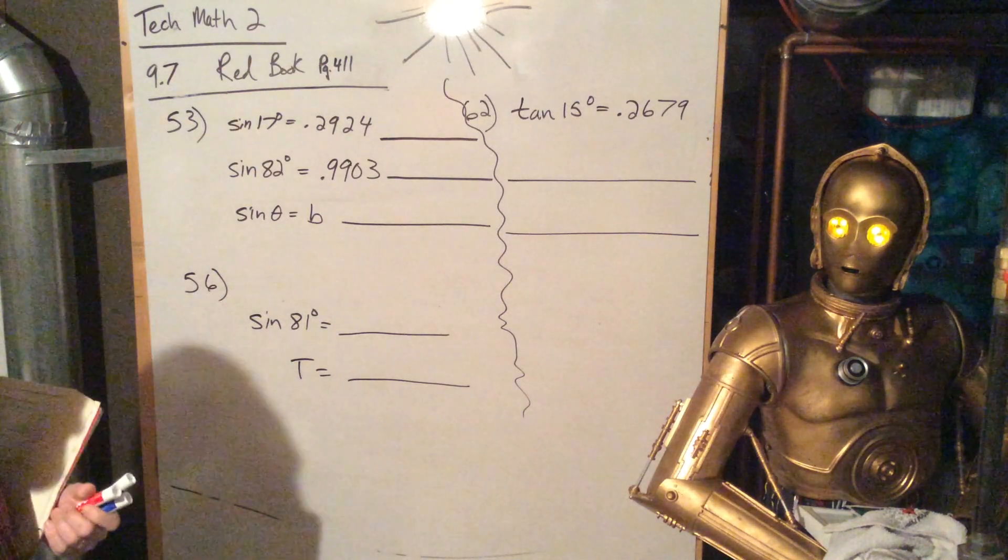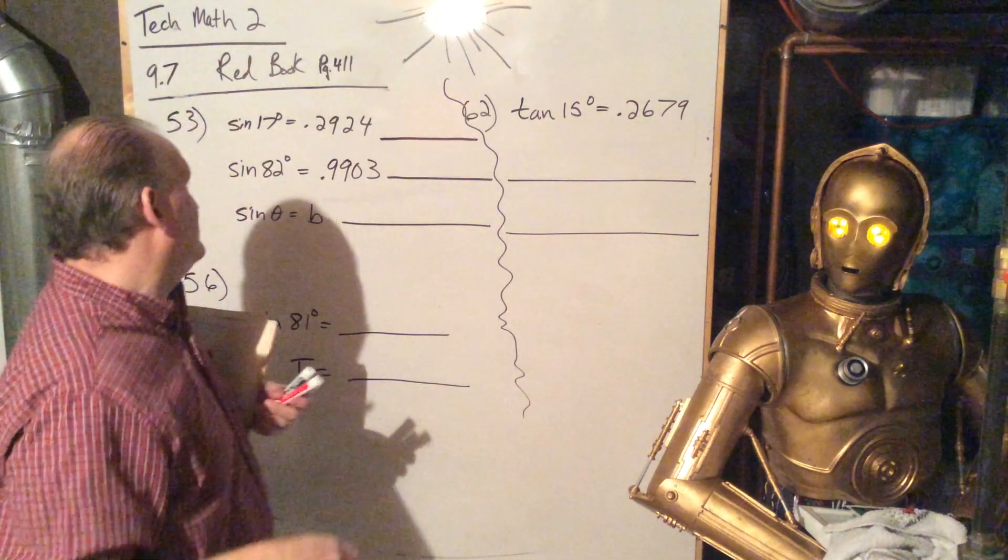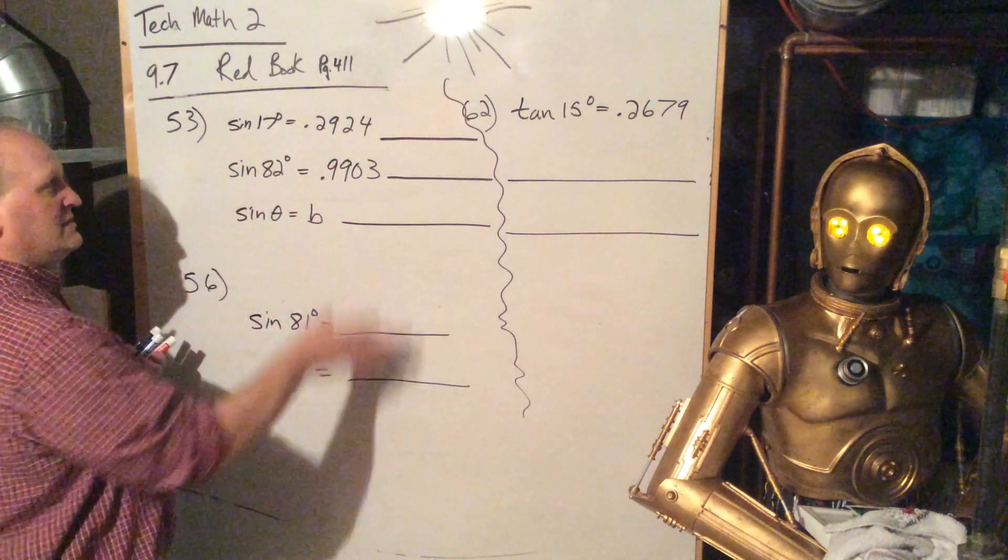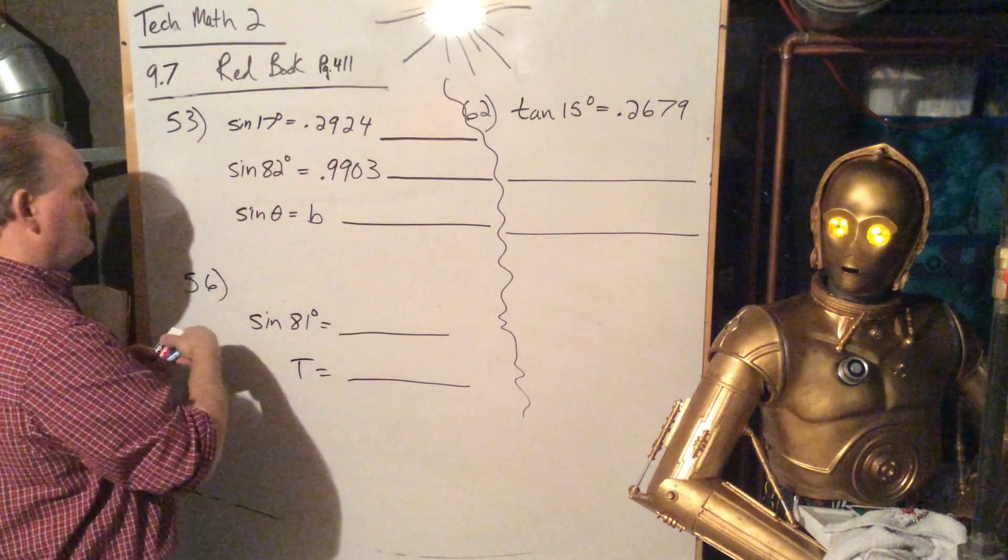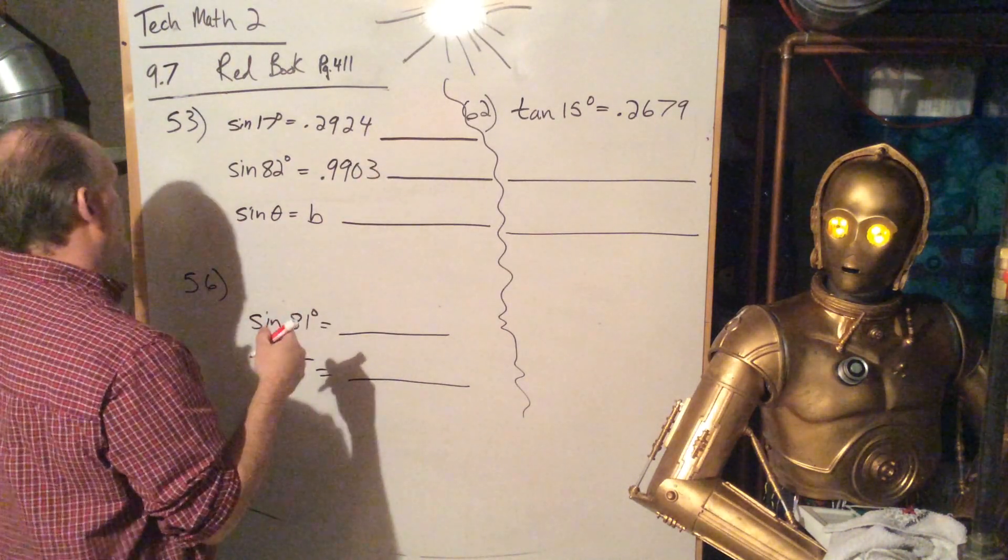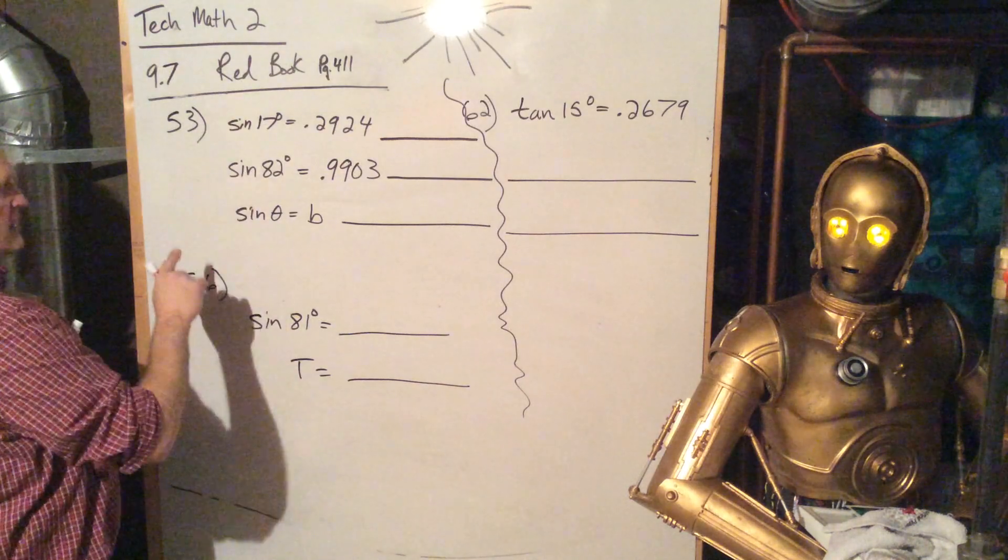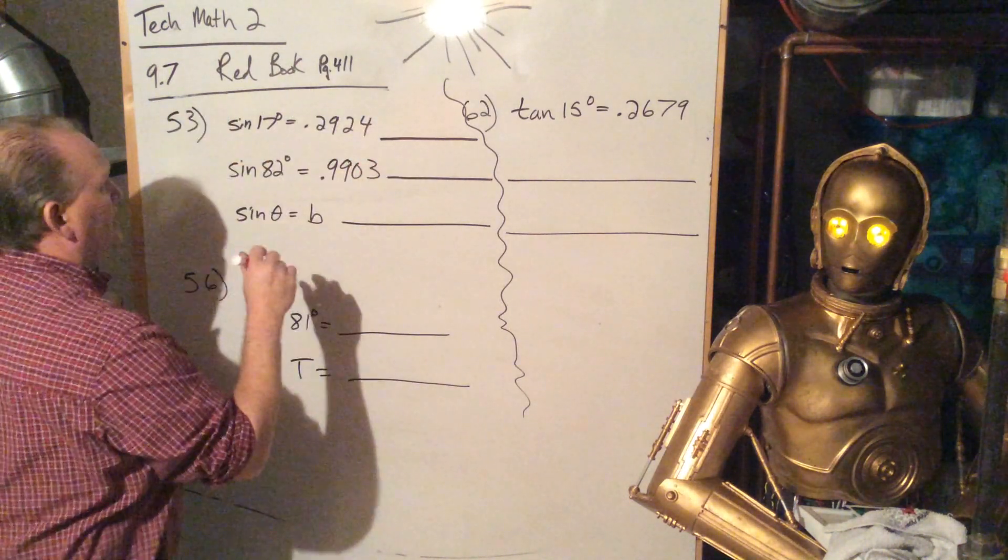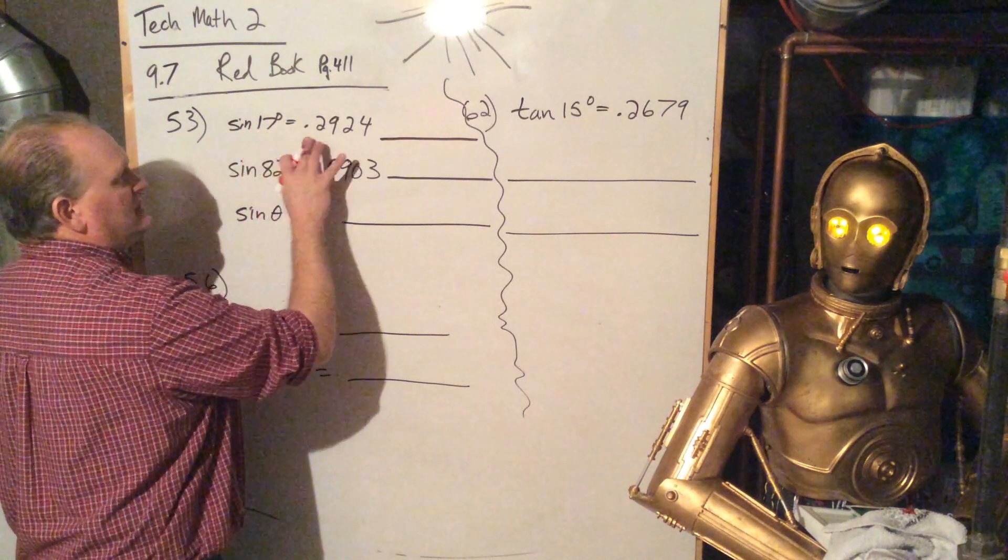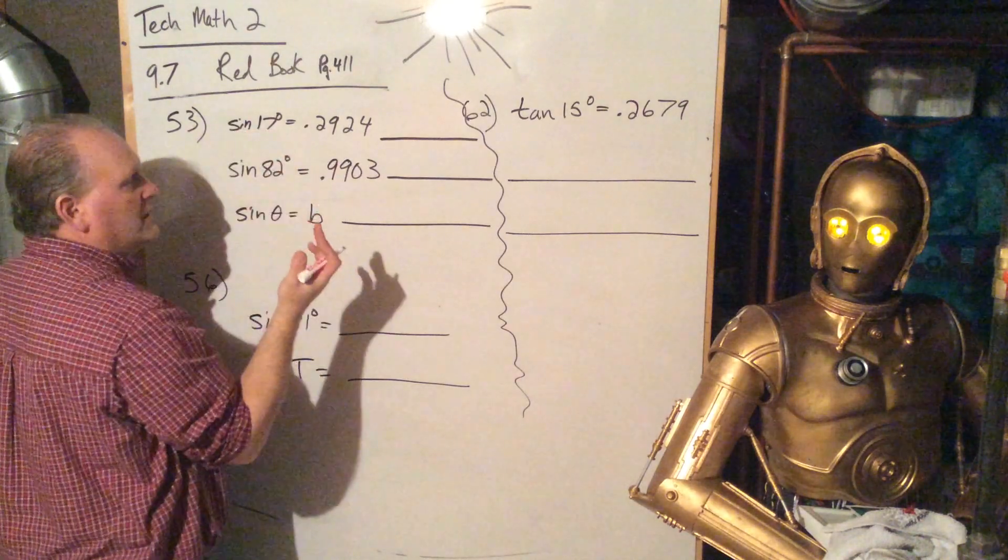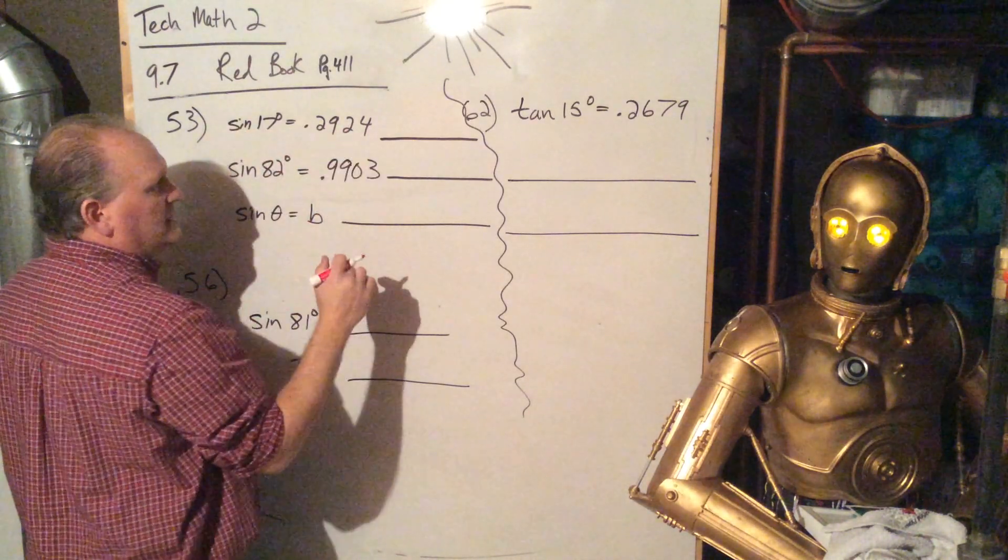And so we've done this already in TechMath 1, we talked about that a little bit. They don't even want us to use our calculators in any of these, they just want us to rewrite them using the arc sine or the arc tangent in this case. So we're looking at 53 and 56 and 62, Red Book, 9.7. Alright, so the sine of 17 degrees is equal to 0.2924. So somebody ticked that into their calculator already, and that's where they clicked out.